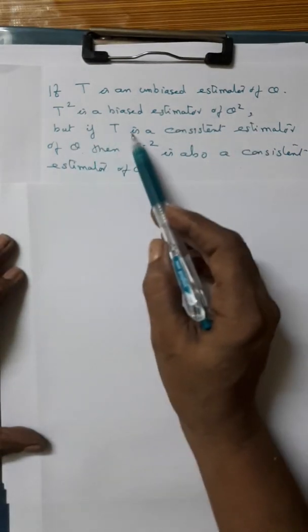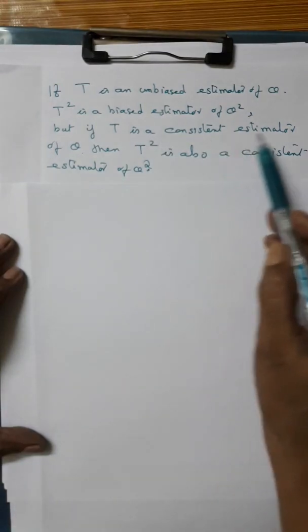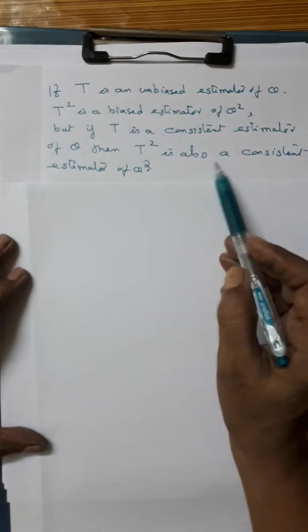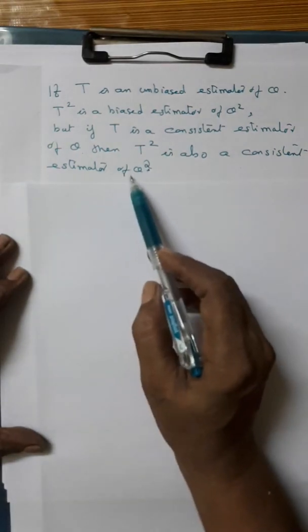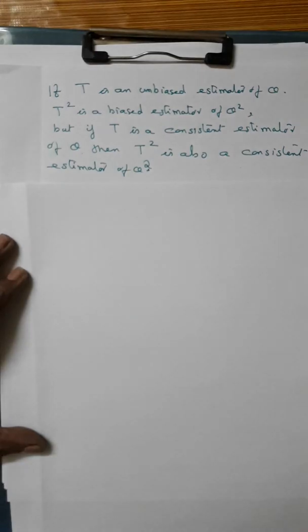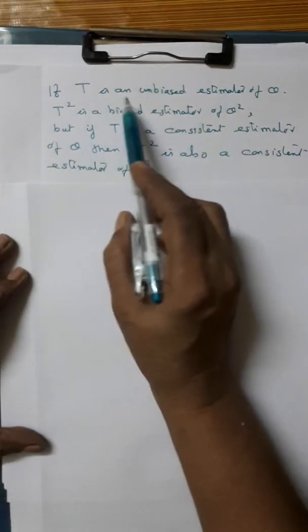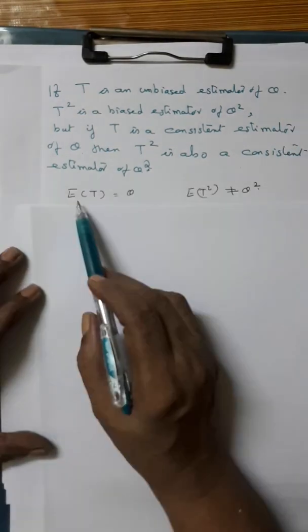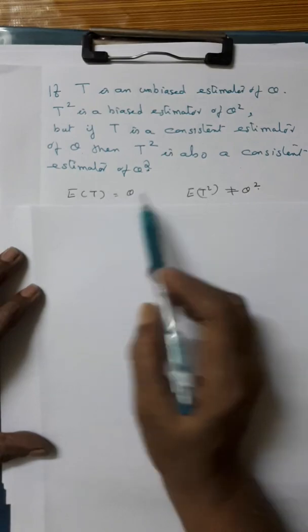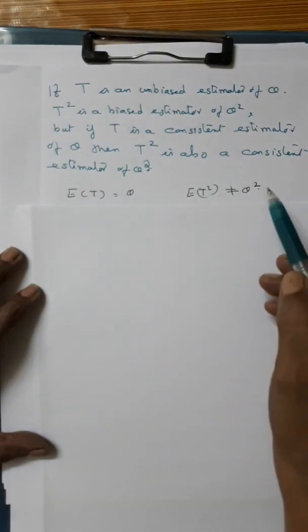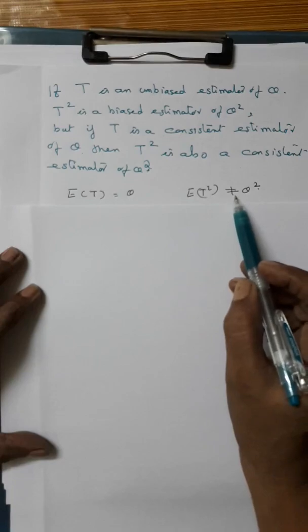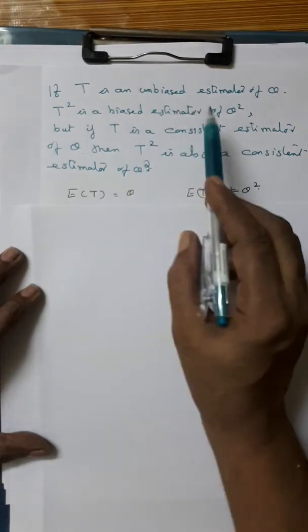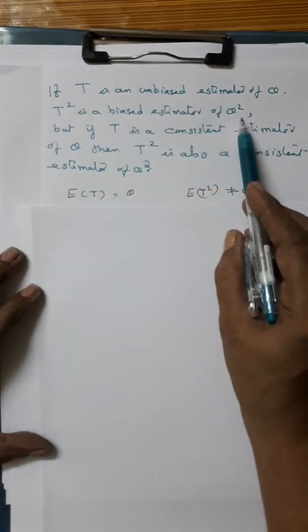But if T is a consistent estimator of theta, then T squared is also a consistent estimator of theta squared. If T is an unbiased estimator of theta, we know that E of T equals theta, and we want to show that E of T squared is not equal to theta squared — that is, T squared is a biased estimator of theta squared.